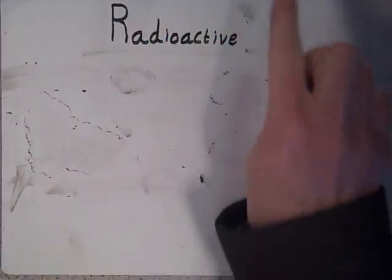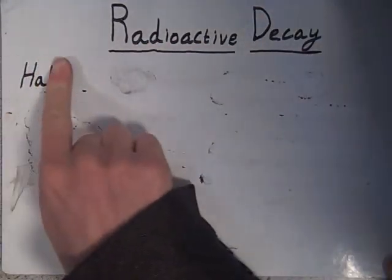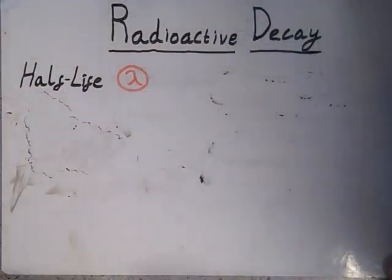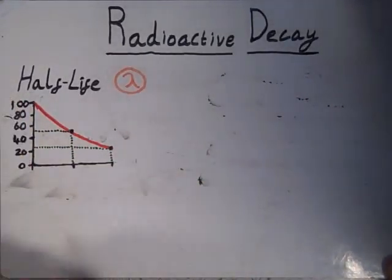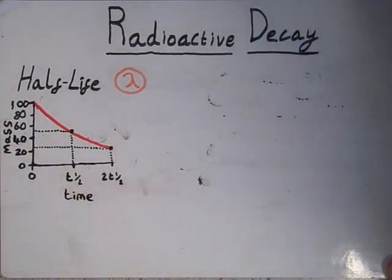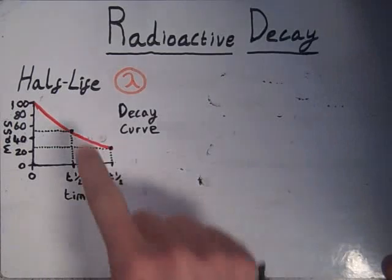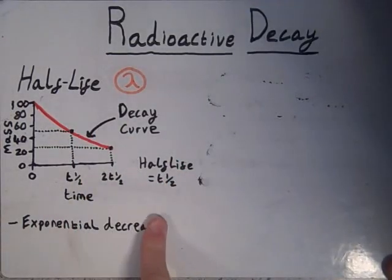Radioactive decay is unpredictable, and the number of nuclei that disintegrate in a given time interval depends only on the total number of nuclei present. The decay is therefore exponential and is commonly represented using a curve on a graph of mass against time. The following three variables are used to model radioactive decay. Number one is the half-life, which is the time taken for the mass to decrease to half of its initial value.